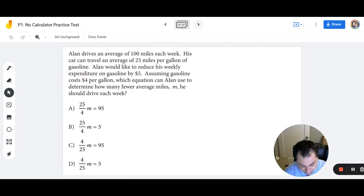Number 15. Alan drives an average 100 miles per week. His car can travel an average of 25 miles per gallon of gasoline. Alan would like to reduce his weekly expenditure on gasoline by $5. Assuming gasoline costs $4 per gallon, which equation can Alan use to determine how many fewer average miles M he should drive each week? So in looking at this problem, I can see that there's two outputs for this equation. Well, what does the equation want? It wants to determine how many fewer average miles. It doesn't want to determine miles total. So I know it's not 95 because the output of the equation should be 5.